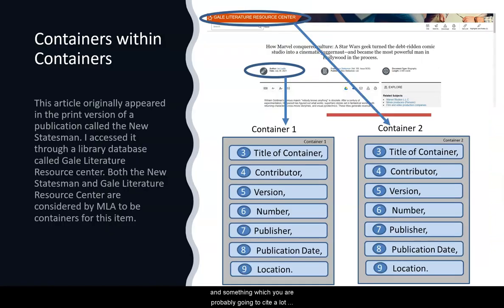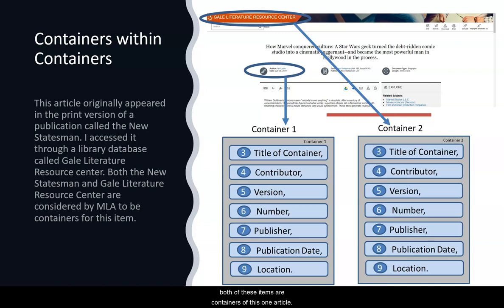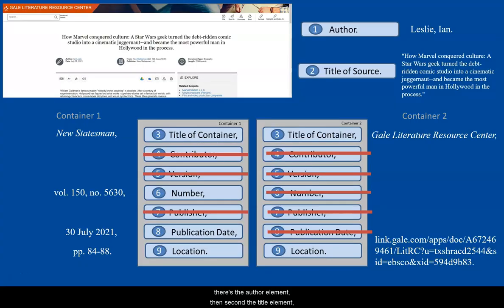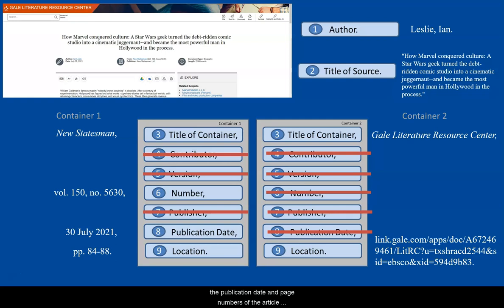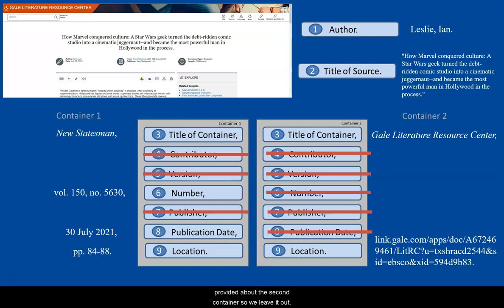Let's try something more complicated — an article from a library database. This article originally appeared in a print version of a publication called The New Statesman. I accessed it through a library database called Gale Literature Resource Center. Both of these items are containers of this article. First, as always, there's the author element, then the title element. Then we move to container one — the publication information for The New Statesman, which is the title of container, the volume and issue number, the publication date, and page numbers of the article. There was no contributor, version, or publisher, so we leave that information out. For the second container, we accessed the item in the Gale Literature Resource Center, so that is the title of container, and the permalink is the location. No other information is provided about the second container, so we leave that out.